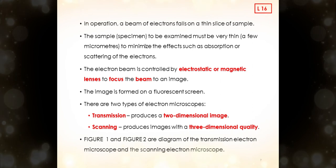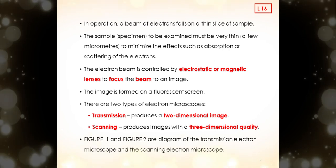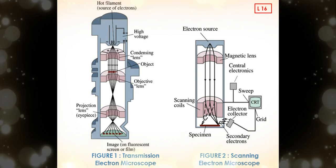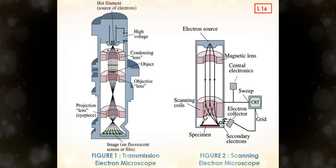There are two types of electron microscopes. The first one is transmission that produces a two-dimensional image. The second one is scanning that produces images with a three-dimensional quality. Figure 1 and figure 2 are diagrams of the transmission electron microscope and the scanning electron microscope.